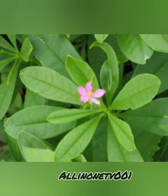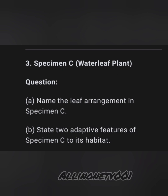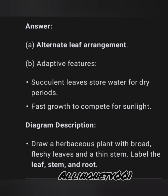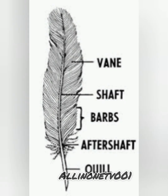Specimen C is a whorled leaf plant, as seen in the diagram. Possible questions: A, name the leaf arrangement in specimen C; B, state two adaptive features of specimen C to its habitat. Answer A: alternate leaf arrangement. Answer B — adaptive features: succulent leaves store water for the dry period; fast growth to compete for sunlight.